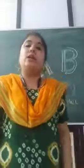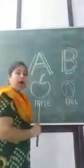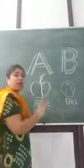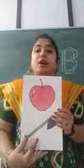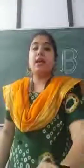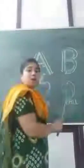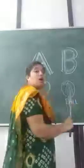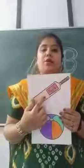This was the phonic sound of letter A and letter B. Now let us know the key words with letter A. A for apple. A for axe. A for aeroplane. Now what is the key word with letter B? B for ball. B for bat.